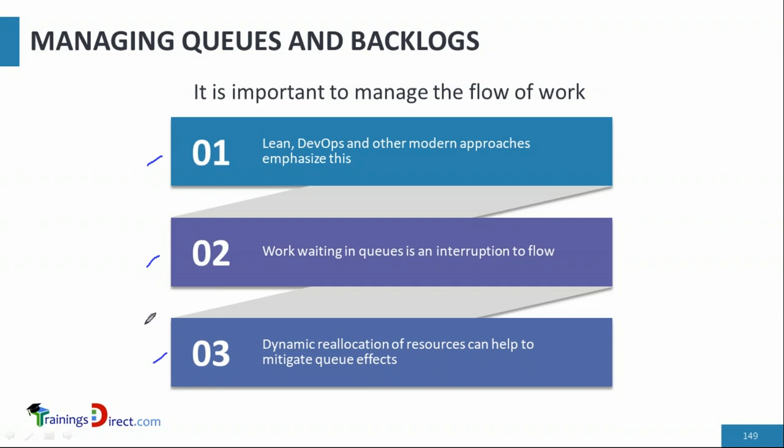For example, if there is a group of five people working on different kinds of requests, there should be dynamic allocation. If one of the five people is free, they should take the next incoming work, provided they have the skills to process it.